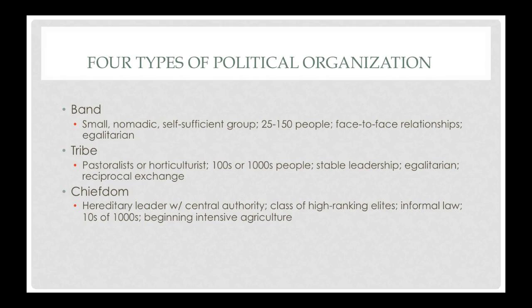Next would be a chiefdom. There's generally a hereditary leader who has authority — meaning when that individual dies, power is passed on to their son. There's a class of high-ranking elites surrounding this leader, so we've lost the egalitarian nature seen with bands and tribes. There is some informal law beginning to emerge, as opposed to relying on informal social control. Chiefdoms have tens of thousands of people, which also brings about the beginning of intensive agriculture — farming collectively rather than just for yourself.